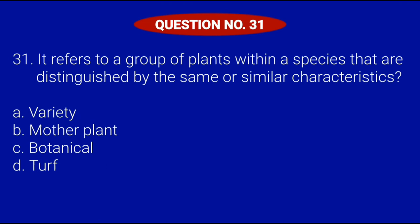Question number 31. It refers to a group of plants within a species that are distinguished by the same or similar characteristics. Letter A, Variety; Letter B, Mother plant; Letter C, Botanical; or Letter D, Turf. Correct answer is Letter A, Variety.